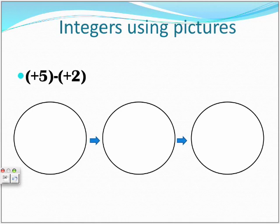For this one, it's basically saying there are five positives in a box. And then it's saying to take away two positives. So we're going to take away two positives and we're going to throw it out of the circle.